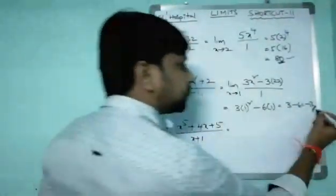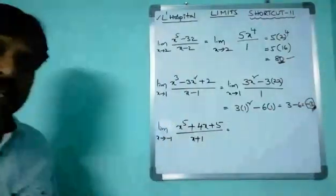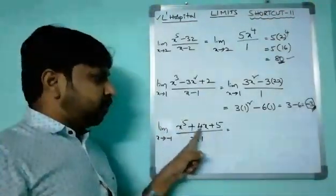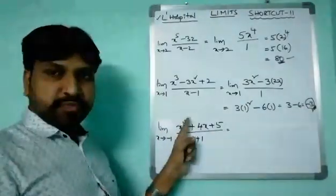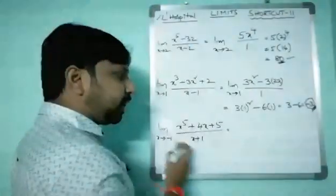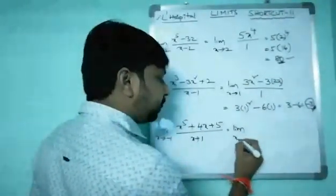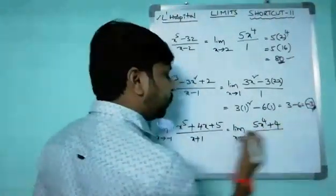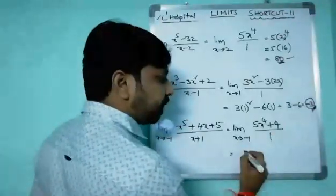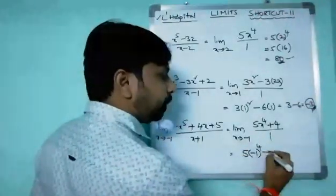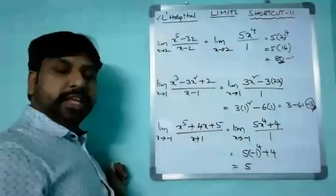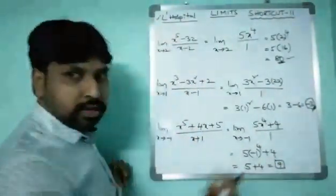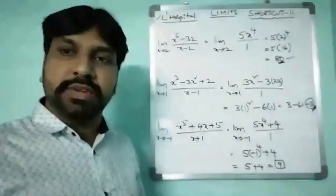The answer comes out to -3. Next example: limit x tends to -1, (x⁵ + 4x + 5) / (x + 1). Substituting x = -1: (-1)⁵ + 4(-1) + 5 = -1 - 4 + 5 = 0, and -1 + 1 = 0. This is 0/0 form. Applying L'Hospital's rule: derivative of x⁵ is 5x⁴, derivative of 4x is 4, constant 0, over derivative of x = 1. Substituting x = -1: 5(-1)⁴ + 4 = 5(1) + 4 = 9. The answer is 9.